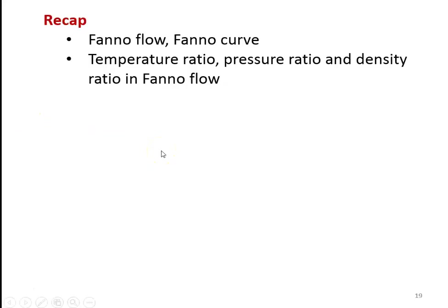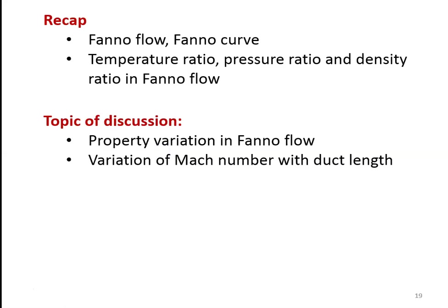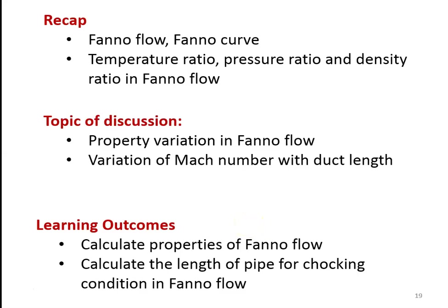In the earlier lecture, we discussed the Fanno flow. We defined Fanno flow, we discussed the Fanno curve, which is the basic curve for the Fanno flow process, and we calculated the property variation — temperature ratio, pressure ratio, density ratio in the Fanno flow. In this lecture, we continue with the calculation of property variation in Fanno flow and calculate the variation of Mach number with duct length. The learning outcome: at the end of the lecture, the student will be able to calculate the properties in Fanno flow and calculate the length of the pipe for choking condition in Fanno flow.